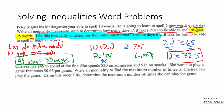Now let's do the next one. Chelsea has at least $45 to spend at the fair. She spends $20 on admission and $15 on snacks. She wants to play a game that costs 65 cents per game. Write an inequality to find the maximum number of times X Chelsea can play the game, and use this inequality to determine the maximum number of times she can play. Let X equal the maximum number of times Chelsea can play the game.